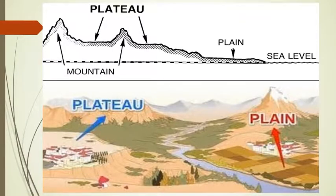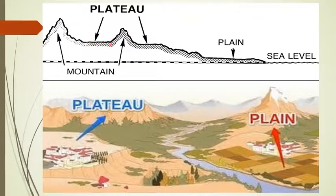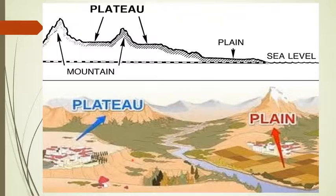Here we have 2D and 3D representations of plateau and plain. In the first diagram, the 2D representation shows that from sea level, the plain area is elevated gradually, and then there is an abrupt elevation — the mountainous area — with a flat area between two mountains called a plateau. In the second diagram, the 3D representation shows a plateau as an abruptly elevated area, while the plain area is a gradually elevated area.